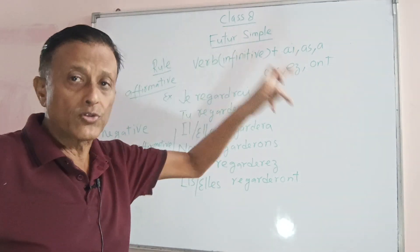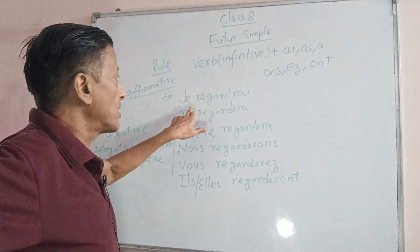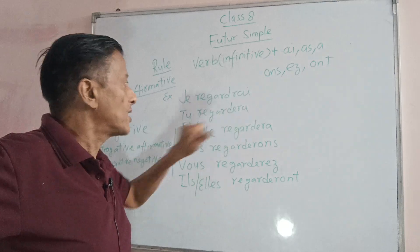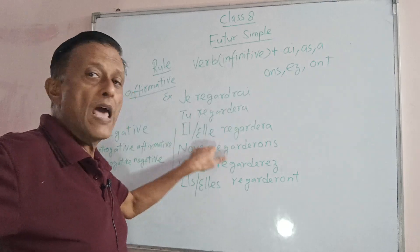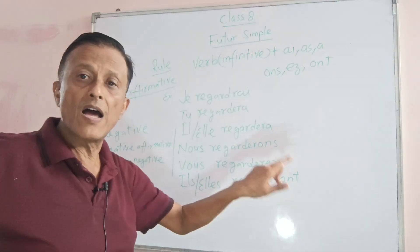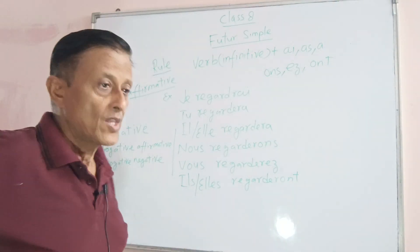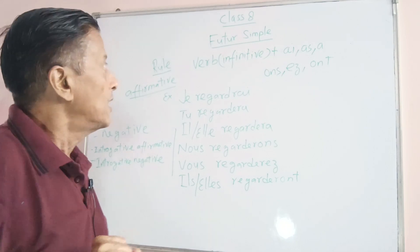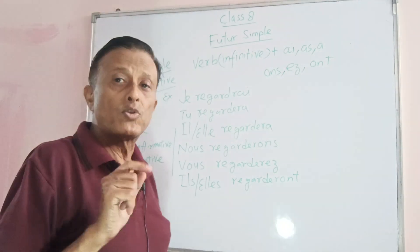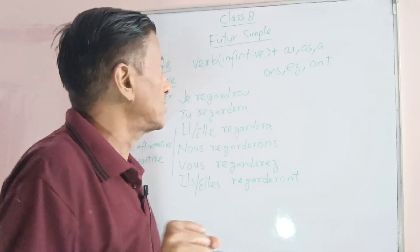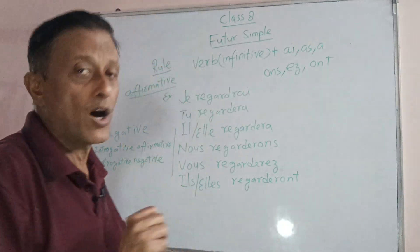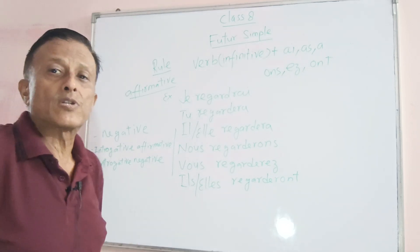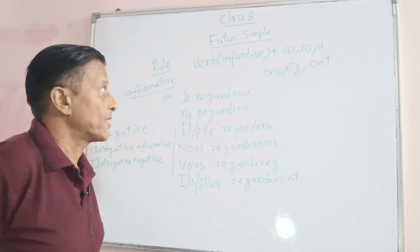So I am going to tell you about the Futur Simple — how do you make this simple future? Here, look at this rule: the rule is verb infinitive, meaning the complete verb without any conjugation.